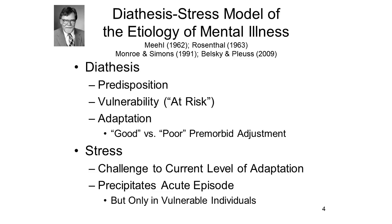According to the model, a diathesis represents a predisposition toward a specific breakdown in normal mental functioning. Its source may lie in the person's biological endowment, experiential history of social learning, or both. In either case, the diathesis renders the person vulnerable to, or at risk for, some specific form of psychopathology. Every person achieves a more or less successful adaptation to this genetic or psychosocial heritage.